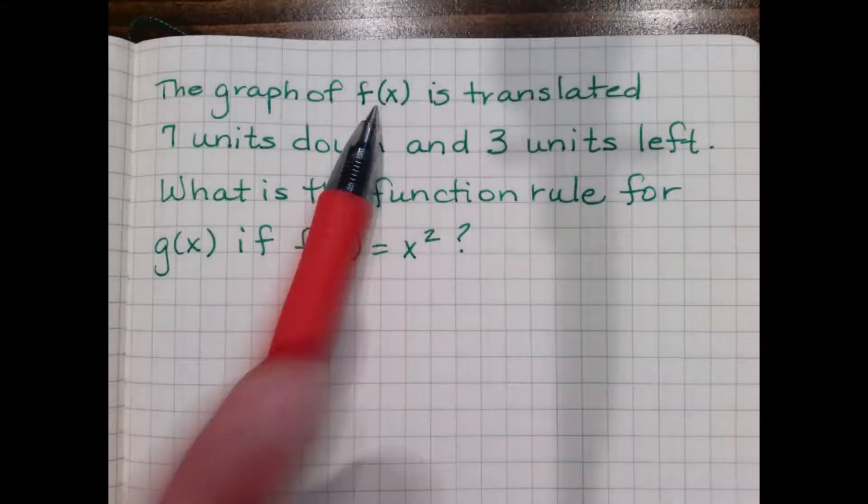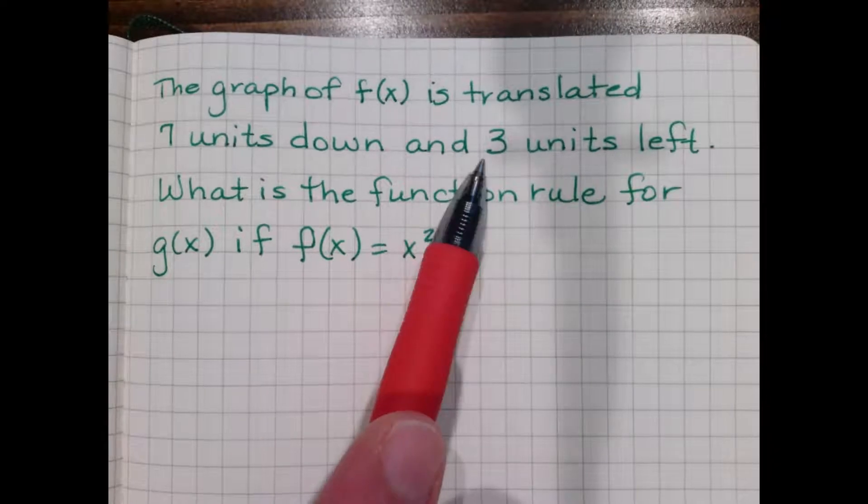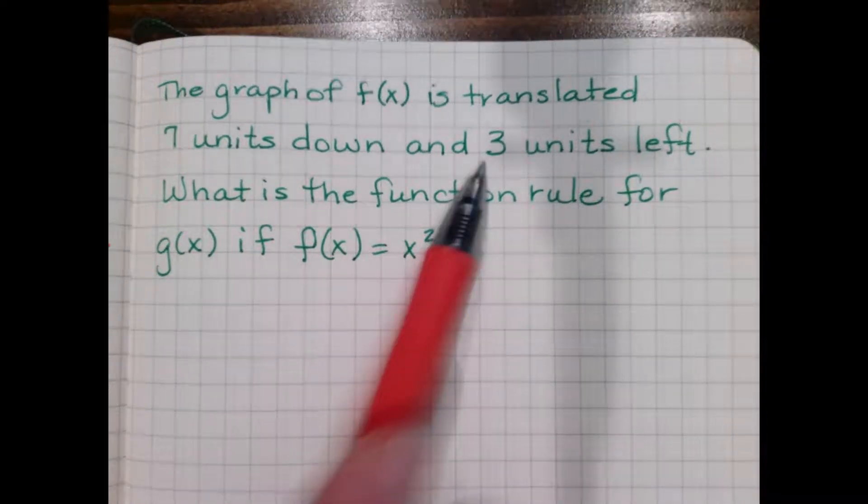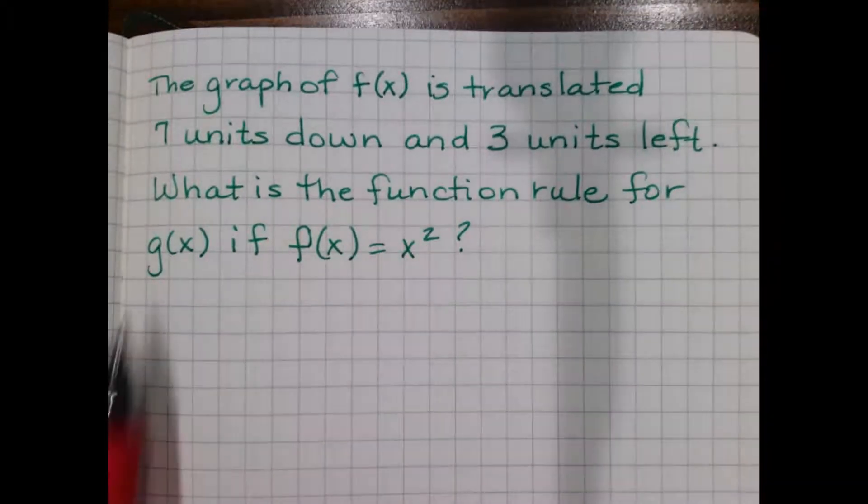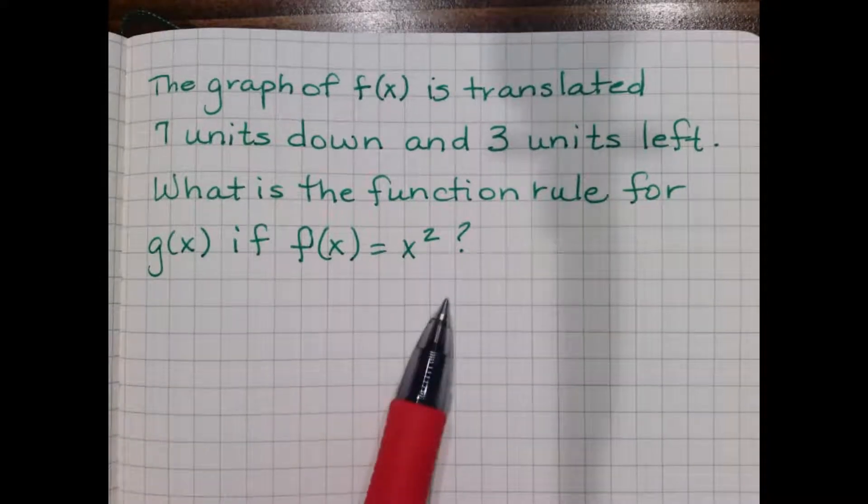We are going to take the graph of f of x and translate it seven units down, three units to the left, and we want to know what the new function rule is for g of x if f of x originally is x squared.